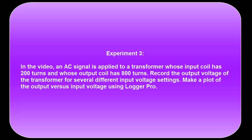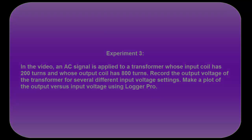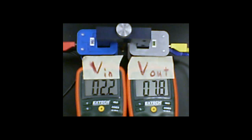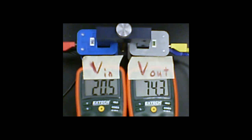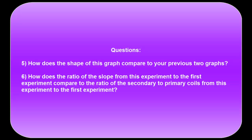In Experiment 3, we do the same thing as the two previous experiments, except that our secondary coil now has 800 turns. Your graph of output to input voltage should now have three curves on it. How does the shape of this third experimental curve compare to your previous two?